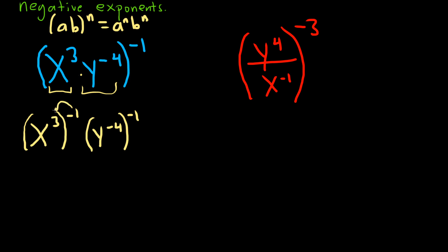So this will just be 3 times negative 1, so x to the negative 3. And then negative 1 times negative 4, so that will be y to the 4. Whoops, y to the 4. Messed up there. x to the negative 3, y to the 4. Okay.